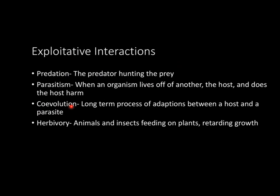Co-evolution is basically a long process of adaptations between a host and a parasite — the host adapting to having a parasite on them. Now let's look at herbivory. Herbivory is basically animals and insects feeding on plants, thus retarding plant growth. Think of an animal or insect really depleting a plant so that it has a hard time growing back to its full size again.